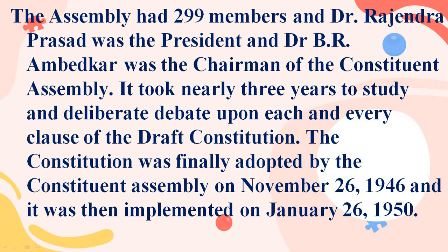The first meeting was held in December 1946. The assembly had 299 members. Dr. Rajendra Prasad was the president and Dr. B.R. Ambedkar was the chairman of the Constituent Assembly. It took nearly three years to study and deliberate upon each and every clause of the draft constitution. The constitution was finally adopted on November 26, 1949, and implemented on January 26, 1950.